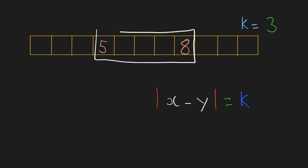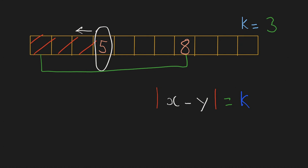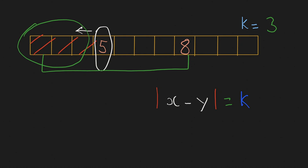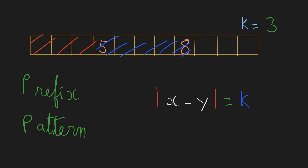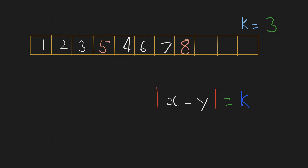But there is still a problem: how do we find the sum of this subarray without going back? It makes sense to store the prefix sum when we encountered 5. Since we have to include 5, we take the prefix sum to the left of it. When we add all values till 8 and subtract that prefix sum, that gives the sum of the subarray. This is a very common prefix sum pattern — I've solved similar problems on this channel and I encourage you to look at those.